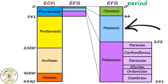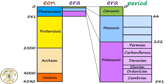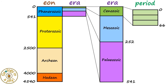The Mesozoic is subdivided into three periods: the Triassic, the Jurassic, and the Cretaceous. The Cenozoic is divided into three periods, with the older Paleogene and Neogene sometimes being grouped together as the Tertiary period, and then the youngest Quaternary period being last.